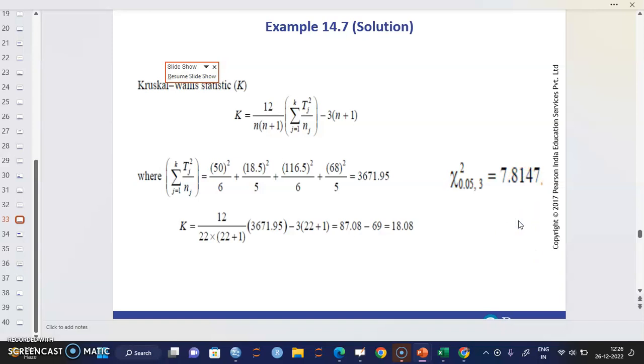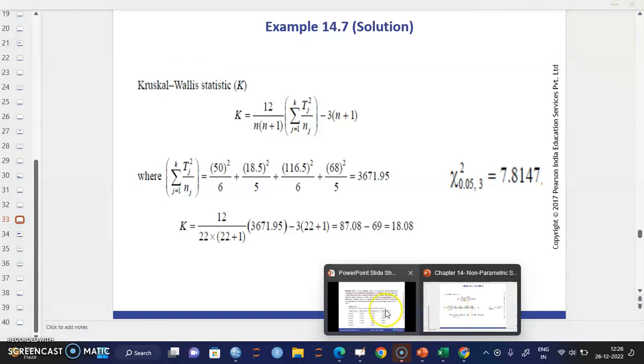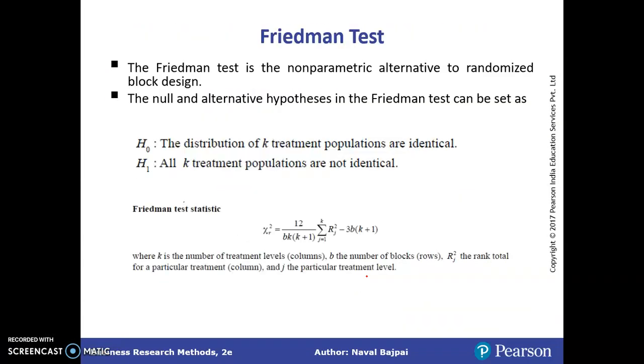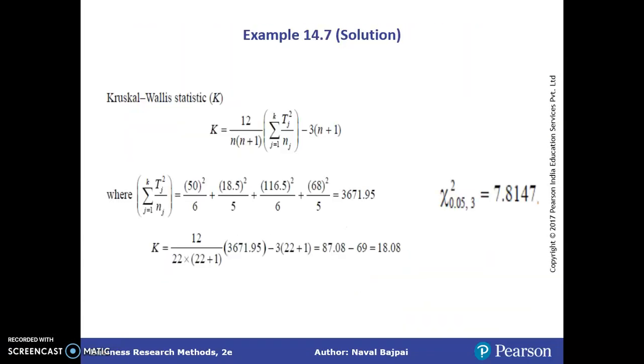So if our value, our calculated value is greater than this value, if our calculated value is greater than the critical value, we will say H naught is rejected.